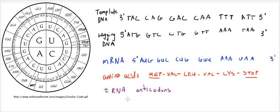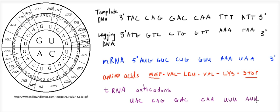So it's like asking: what would bond to AUG to bring a Met? You just find the complementary bases to the mRNA, again in RNA language. You'll see that the anticodons are just the RNA version of the original template DNA. So AUG goes to UAC, then CAG, then GAC, then CAA, then UUU, then AUU.